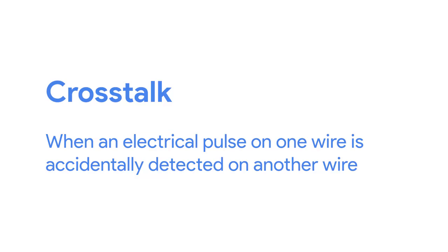Cat5e cables have mostly replaced those older Cat5 cables because their internals reduce crosstalk. Crosstalk is when an electrical pulse on one wire is accidentally detected on another wire, so the receiving end isn't able to understand the data, causing a network error. Higher level protocols have methods for detecting missing data and asking for the data a second time, but this takes up more time. The higher quality specifications of a Cat5e cable make it less likely that data needs to be retransmitted, meaning on average you can expect more data to be transferred in the same amount of time.